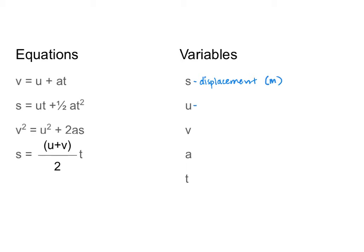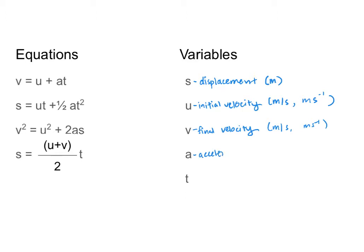Next we have u and v, and both are velocities. u is our initial velocity — our velocity at the beginning of our story — and v is our final velocity, the velocity at the end of the story in our word problem. Initial velocity is measured in meters per second, and final velocity uses the same units. Next we have acceleration, which is our change in velocity over time, measured in meters per second squared. And finally, t represents time, measured in seconds.